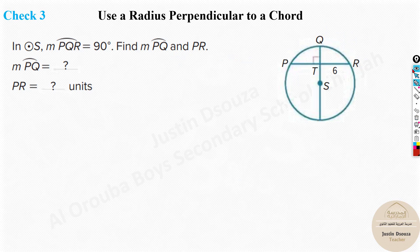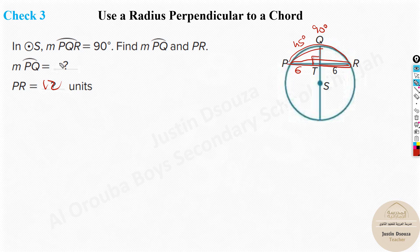Try this problem yourself: arc PQR is 90 degrees. We need arc PQ and length PR. Since the diameter is a perpendicular bisector, arc PQR is bisected — PQ = 45 degrees. For PR: TR = 6, and since QS is a perpendicular bisector and this is the diameter, it bisects equally, so PR = 12 units. The answers are 45 degrees and 12 units.